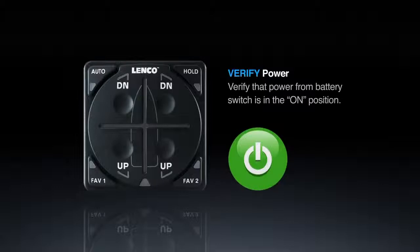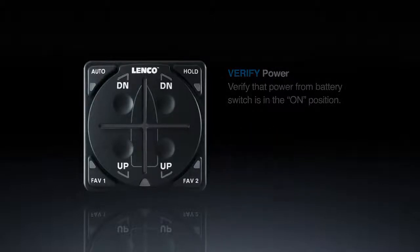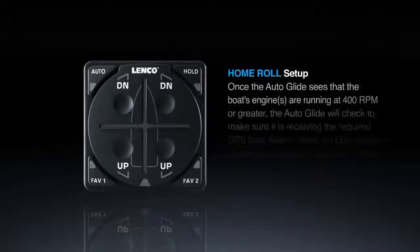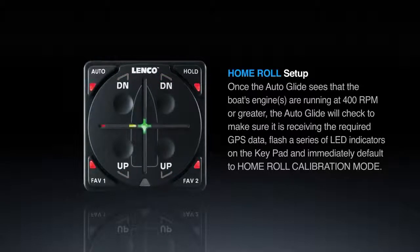Verify that the power from the battery switch is in the on position. Turn your engines on so the auto glide sees 400 RPM or greater tack signal from the engine. Once the auto glide sees that the boat's engines are running at 400 RPM or greater, the auto glide will check to make sure it's receiving the acquired GPS data, flash a series of LED indicators on the keypad, and immediately default to home roll calibration mode.